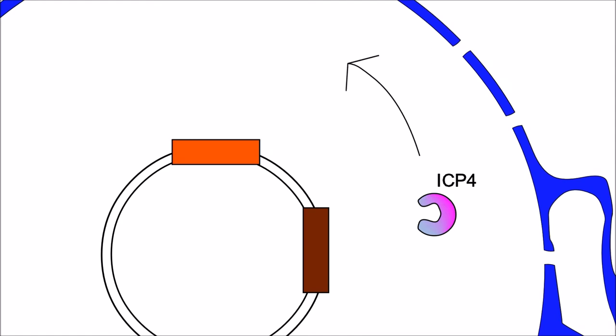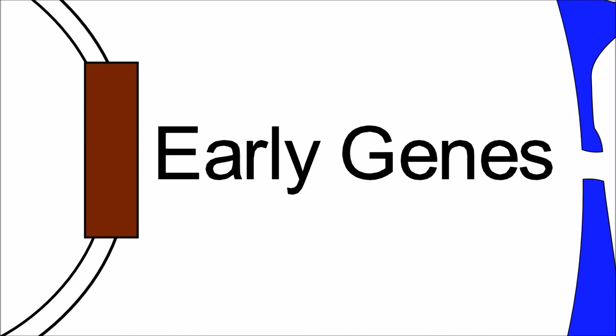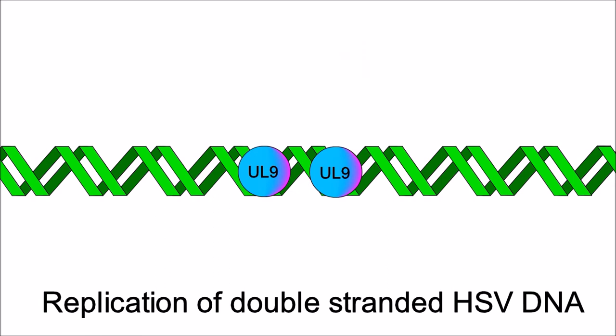Now we look at early genes. Early genes are responsible for replication of viral double-stranded DNA and late genes are responsible for structure of proteins. During replication, the origin binding protein UL9 binds to the origin of replication site. These proteins then form a replication bubble.